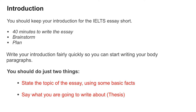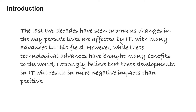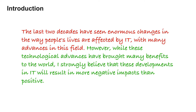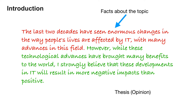You should do just two things: state the topic of the essay using some basic facts, and say what you're going to write about. Here's an example of an introduction. First, some facts about the topic have been given — the writer has paraphrased this from the question. You can't copy the question but you can use information from it to write your first sentence. Then we have a thesis which says what the essay is going to be about.